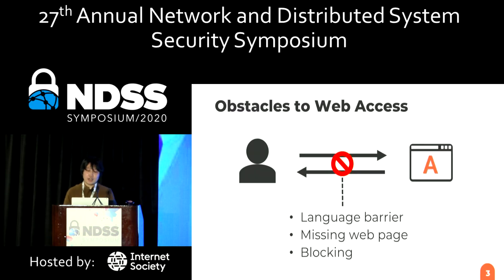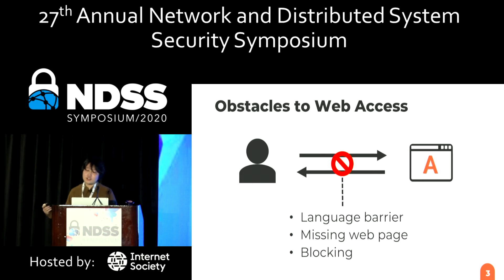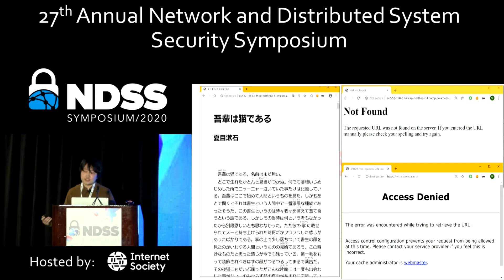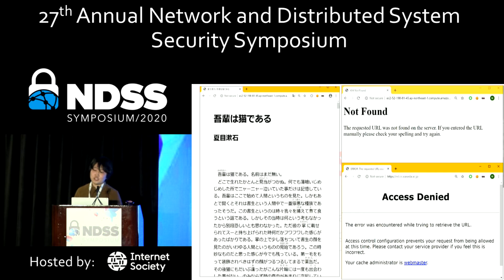First, I'll talk about the background of this work. Despite efforts to provide the openness of the internet, various types of obstacles still exist in the web, such as language barrier, missing web pages, and access blocking. We often encounter pages we cannot understand due to linguistic issues, content deleted from the web, and authorities such as nations, companies, and schools blocking access to certain domains.